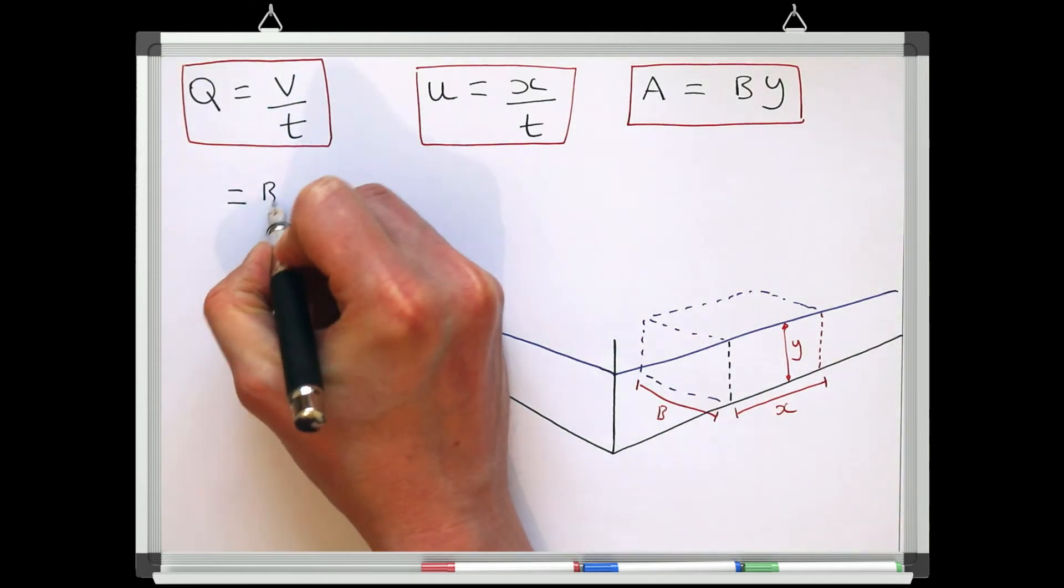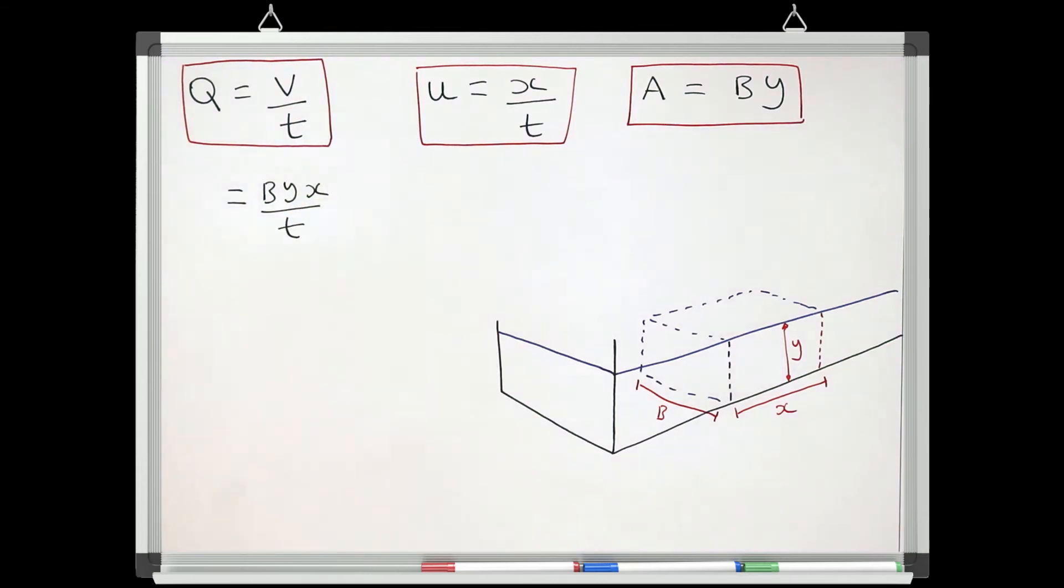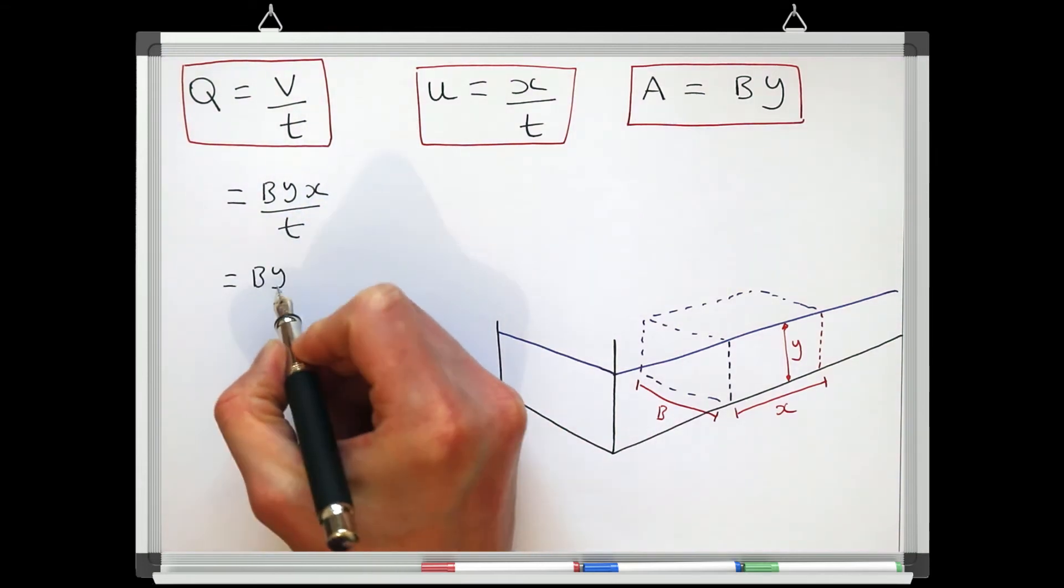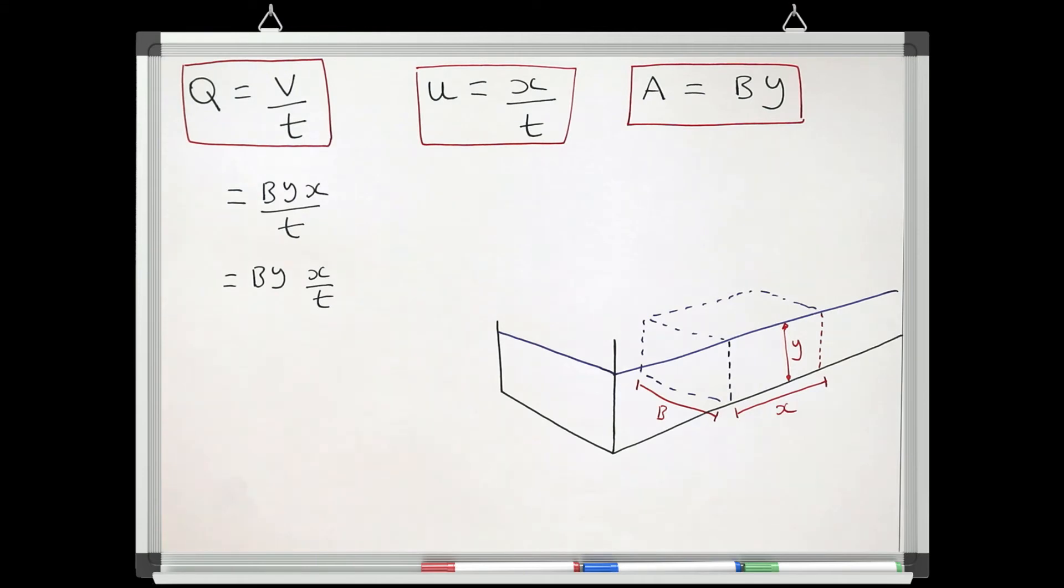So the discharge being volume over time is actually the same thing as the channel width times by the flow depth times by the distance over time.